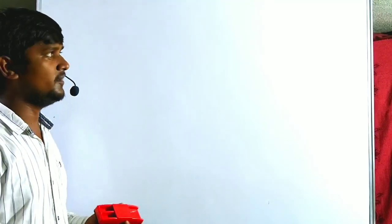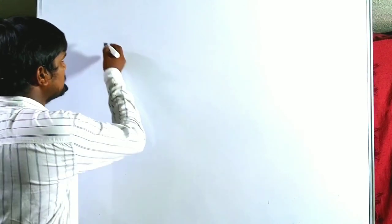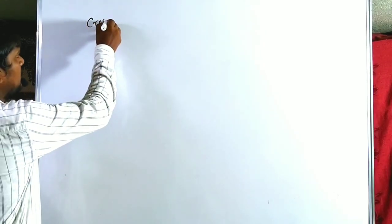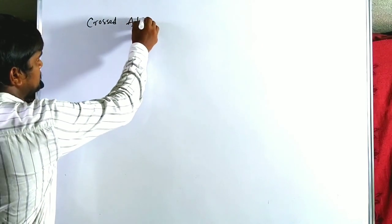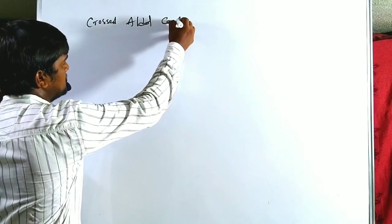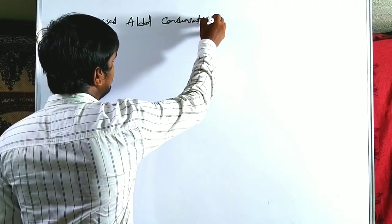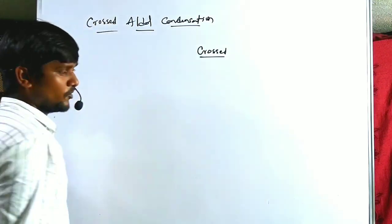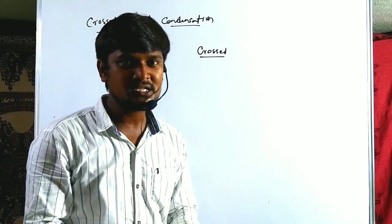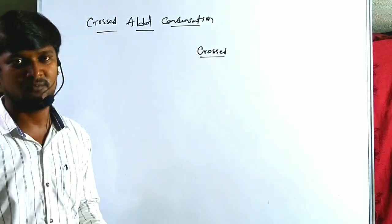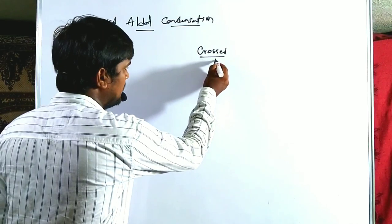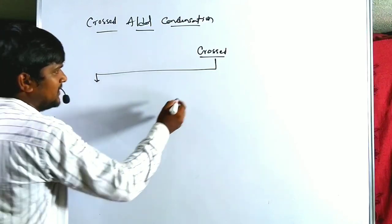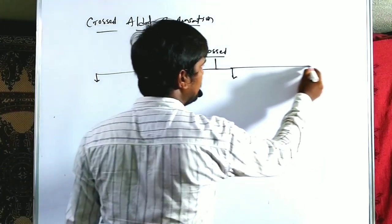Now if you take the different types of carbonyl compounds, how many types of products will they produce? Let us take a simple diagram, based on that we will discuss the cross-aldol condensation types. Cross-aldol condensation means the condensation between two different types of carbonyl compounds. We have already classified this in the previous lecture.